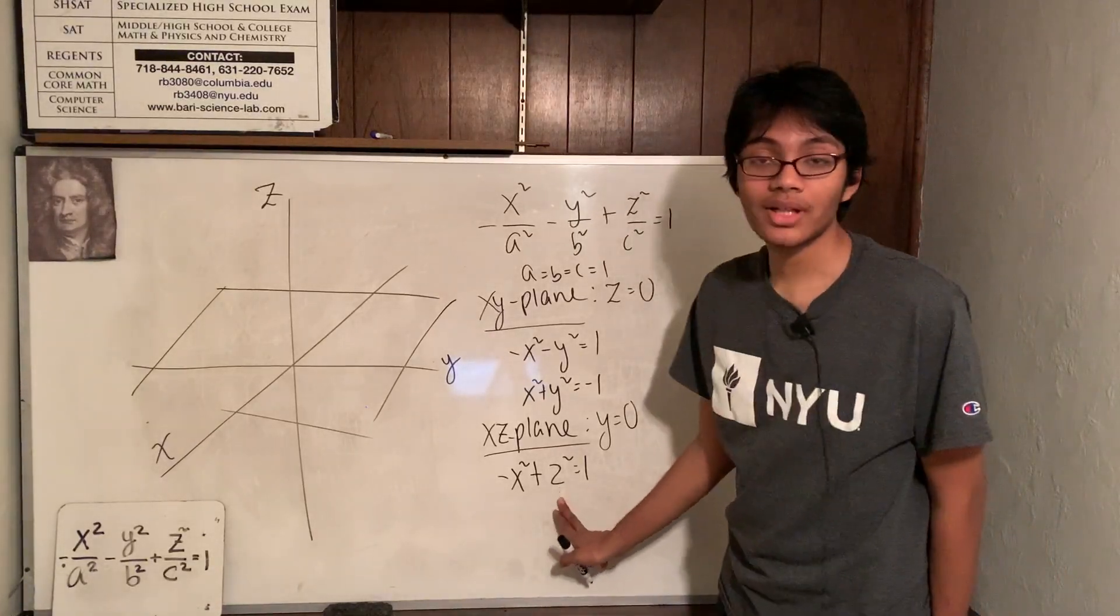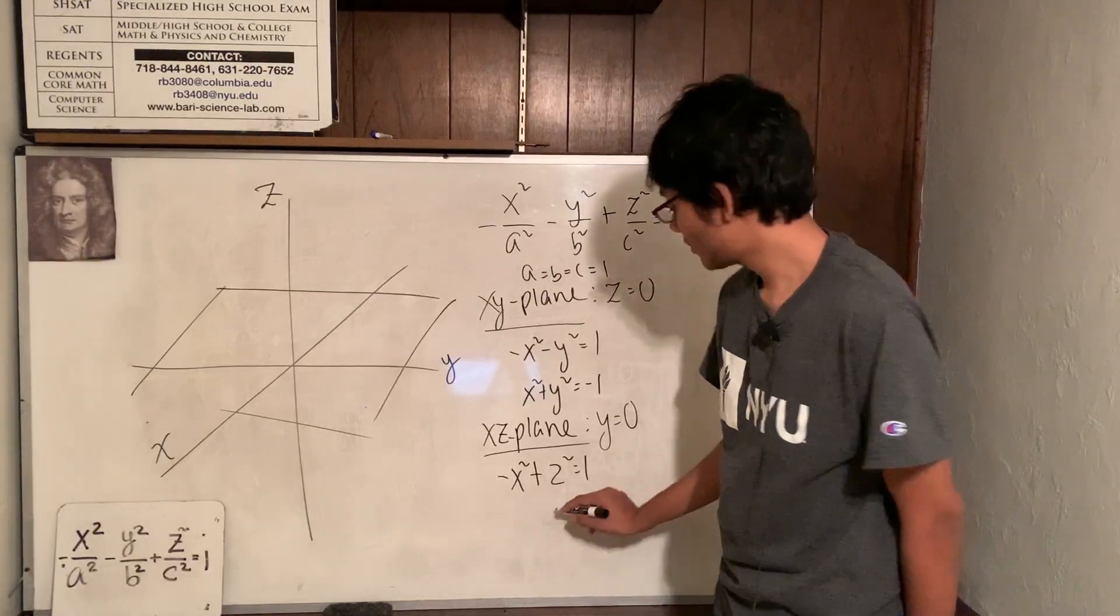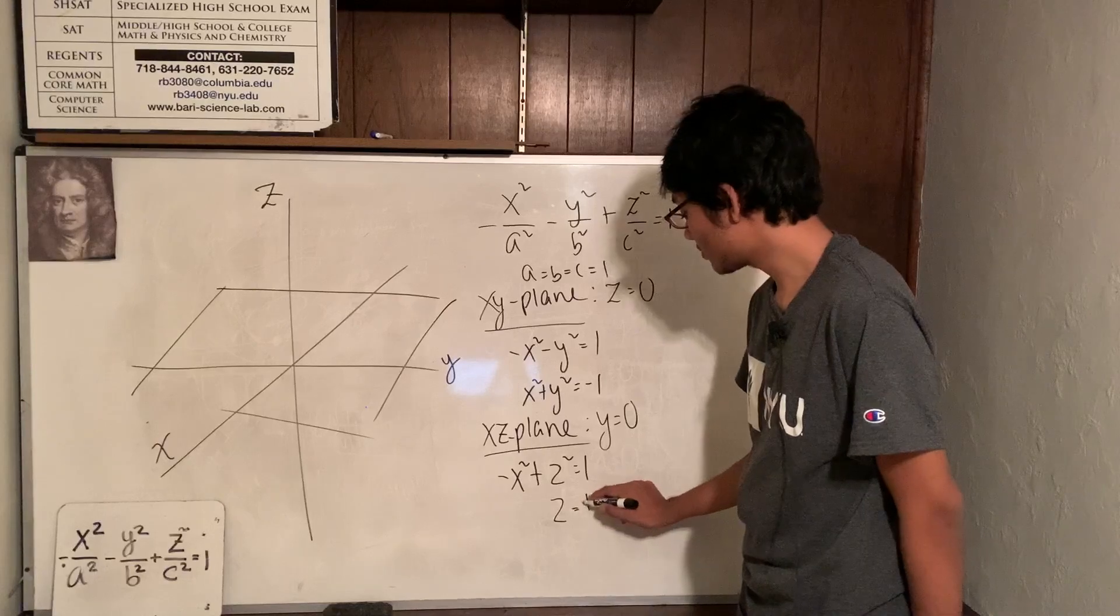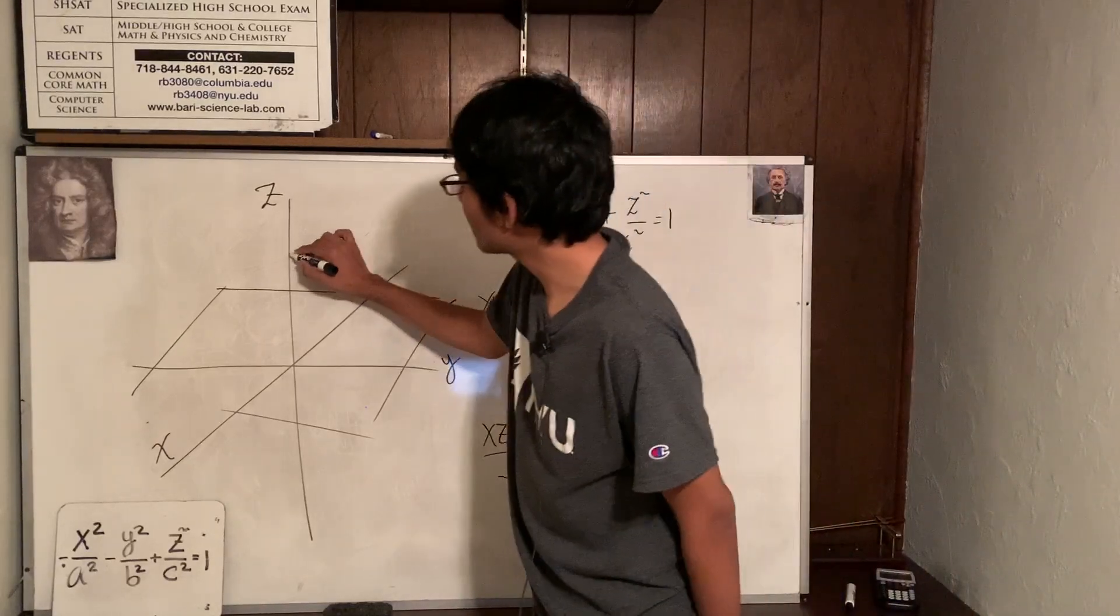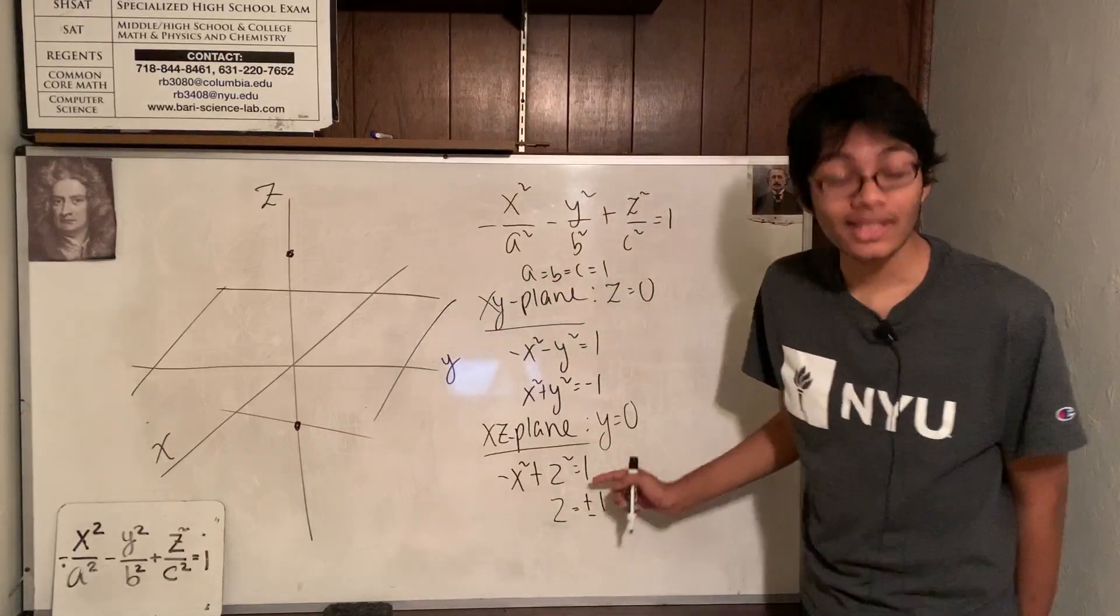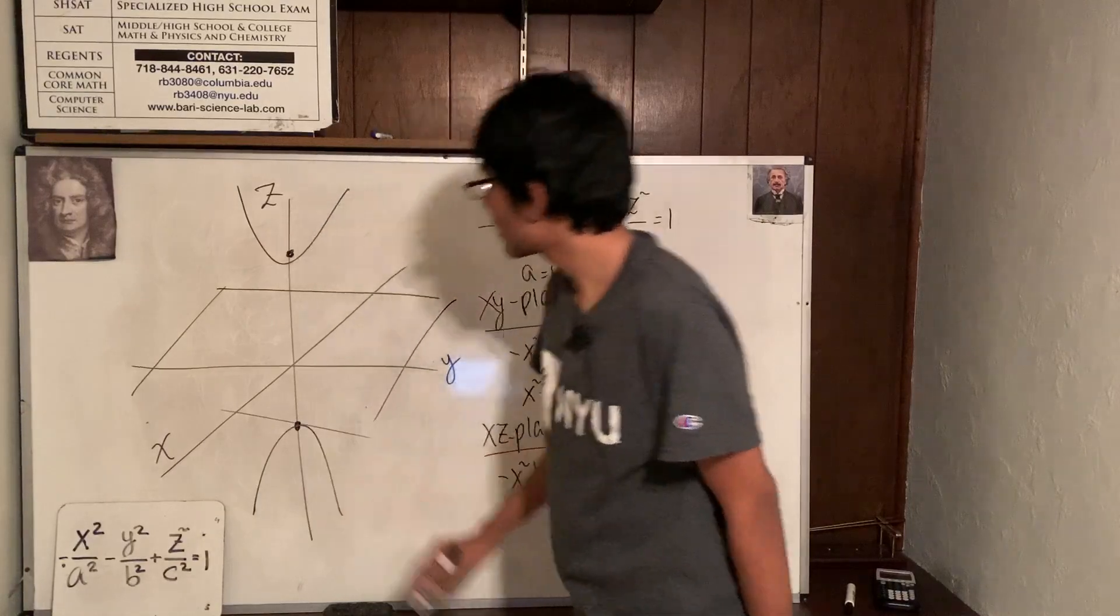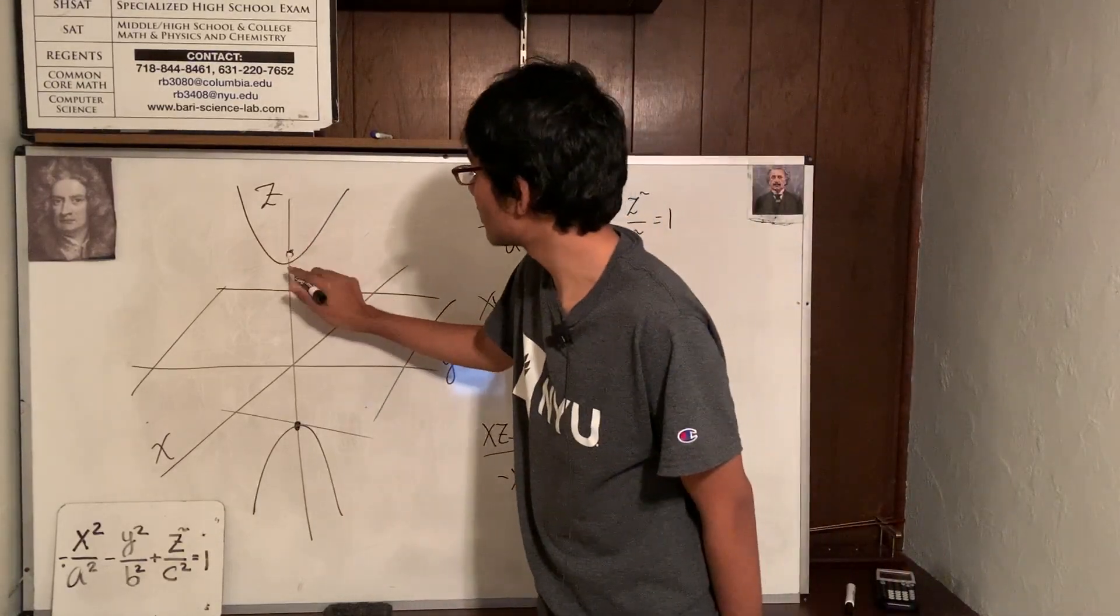Well, if you go ahead and plug in for z, if you let x be 0 and solve for the z intercepts, what are you going to get? You're going to get z is plus minus 1. So, that plus 1 over here, minus 1 over here, that looks like a hyperbola to me. It's an up and down hyperbola.